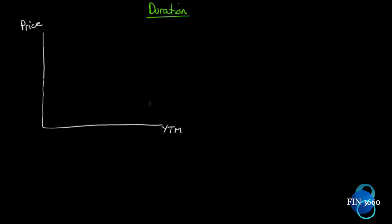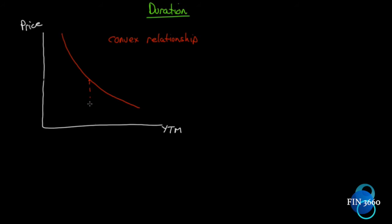We know that the price and the yield to maturity of a bond have an inverse relationship. As the yield to maturity increases, the price of a bond decreases; as the yield decreases, the price increases. But it's not a straight line — it is a convex relationship between the two. You can already start to see where we get the term convexity from.